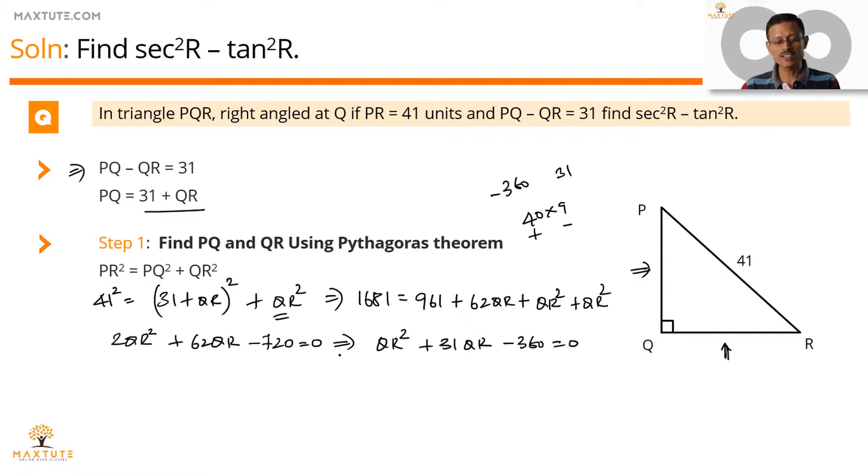So we'll factorize as QR square plus 40 QR minus 9 QR minus 360 equals 0. So essentially, the factorization will boil down to QR plus 40 into QR minus 9 equals 0.